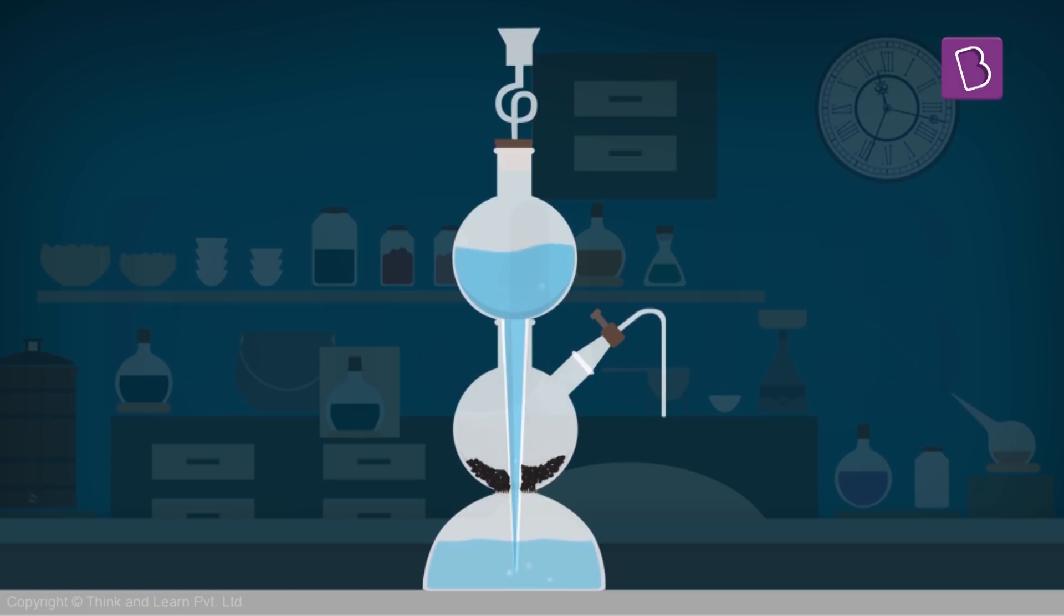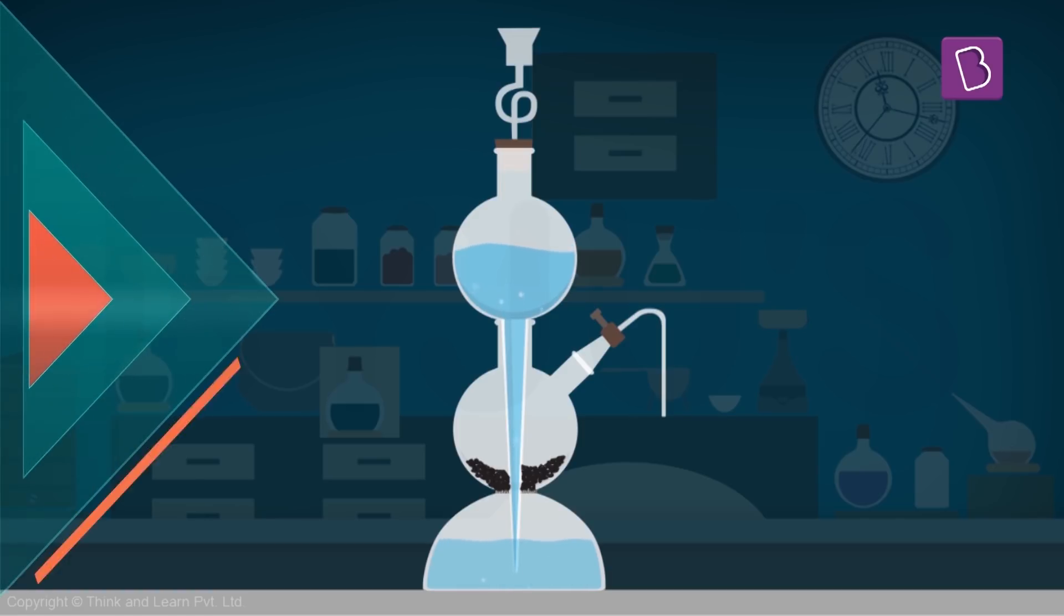Where does the H2SO4 go? Well, remember that tiny cone-like structure? It goes back up into the first globule. That's the cool thing about this apparatus. I have a way of controlling the reaction by just closing this stopcock.